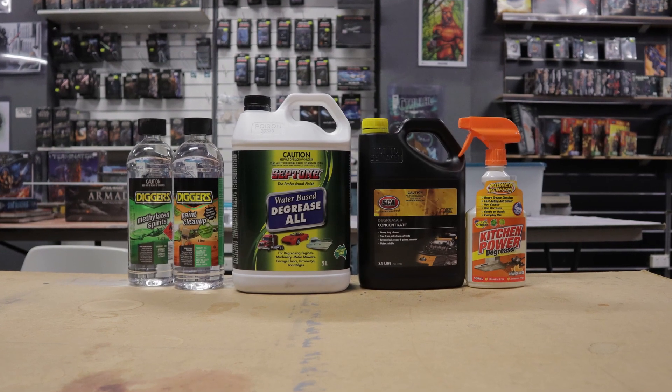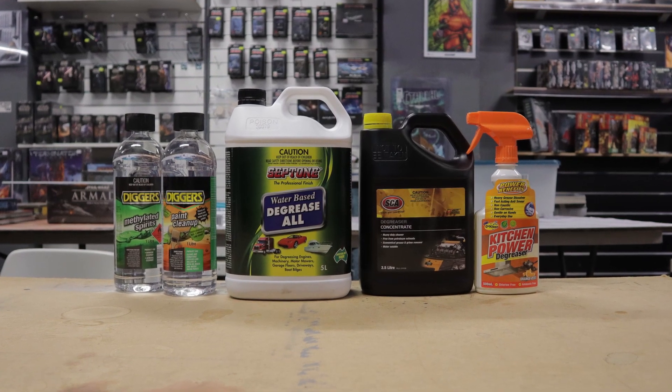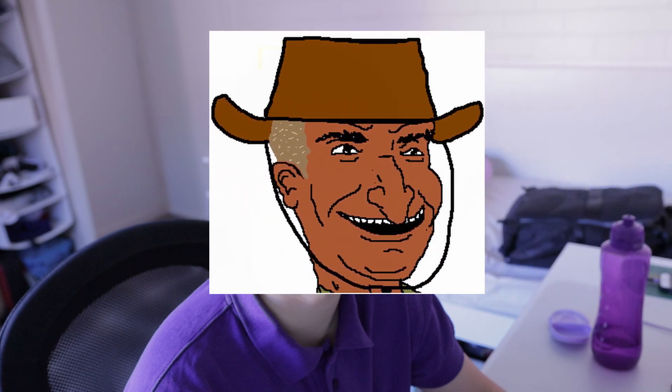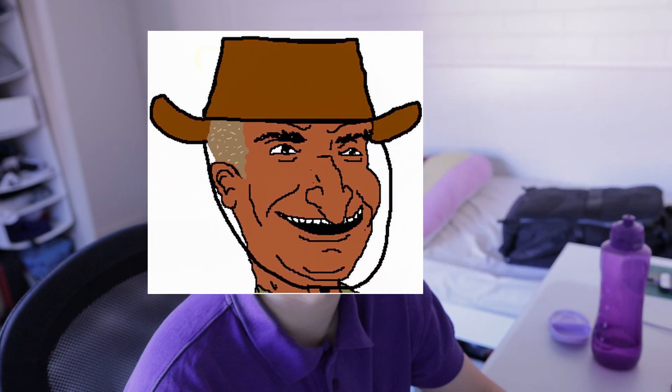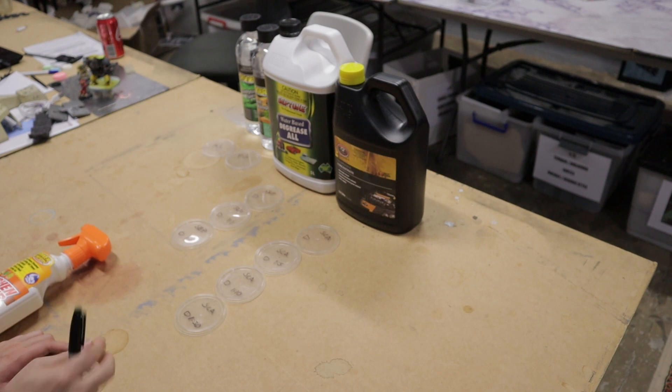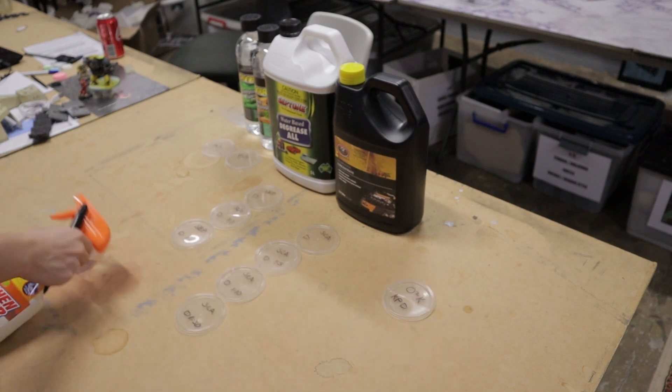So here's a selection of detergents from Bunnings and Supercheap Auto. And to find out which works best, let's conduct some Bogen science. Before I start the experiment, I label all the containers to keep track of each cleaner.